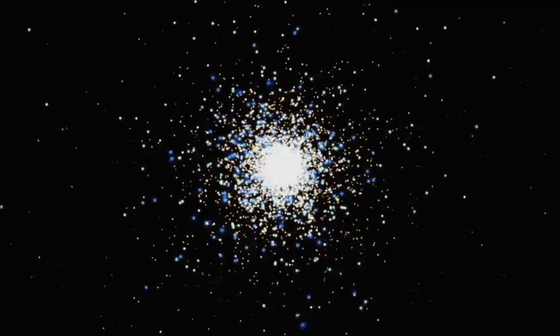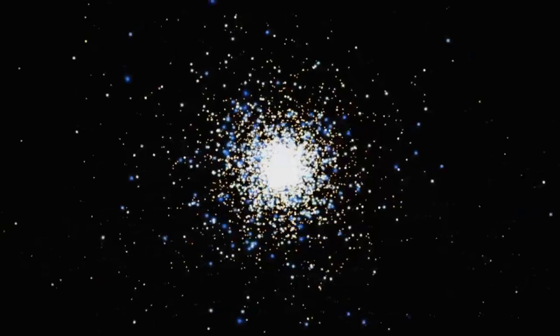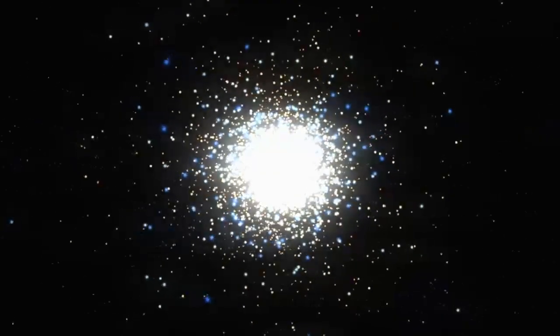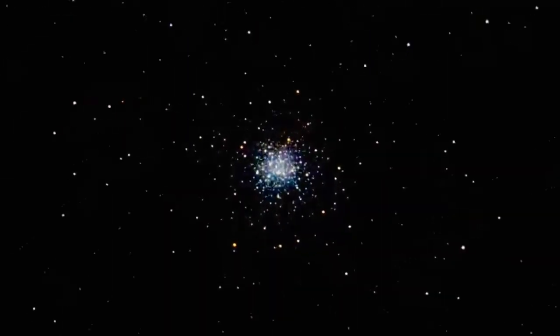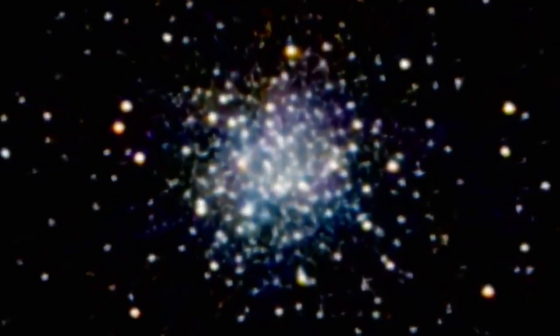Globular clusters, almost as old as the universe itself, gave us the first clue to our place in the galaxy. We saw these globular clusters in the sky, but their center was somewhere far away from us. And that was one of our first measurements of where the middle of the galaxy should be. They weren't orbiting around us, but around an area somewhere about 27,000 light years away.